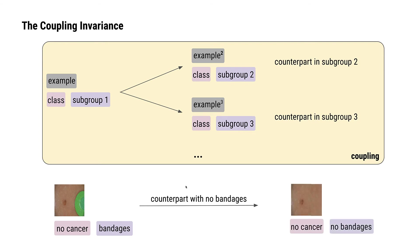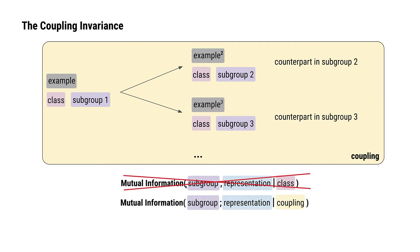We can imagine something like this, which is the same image with the bandage removed. Using this idea of a coupling, we define a new mutual information quantity.